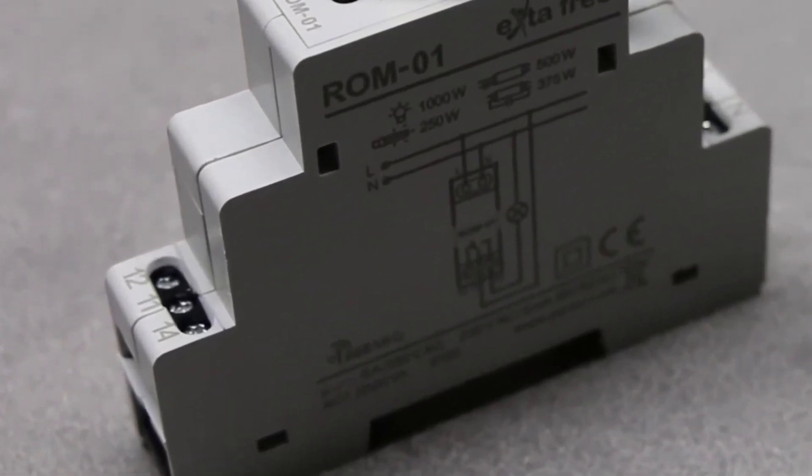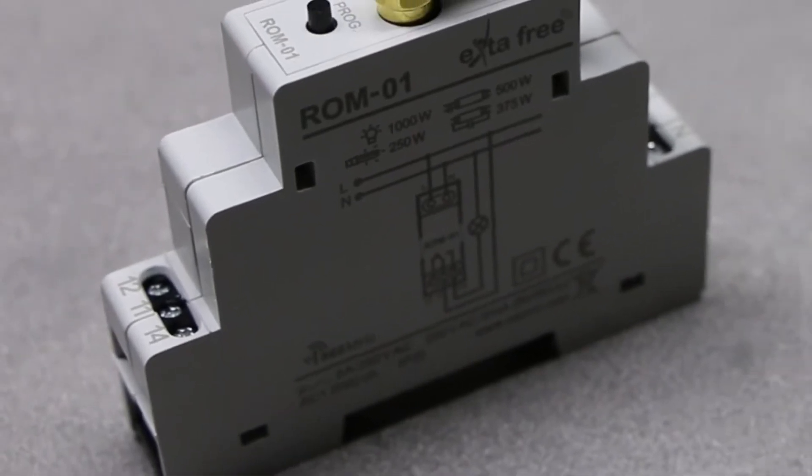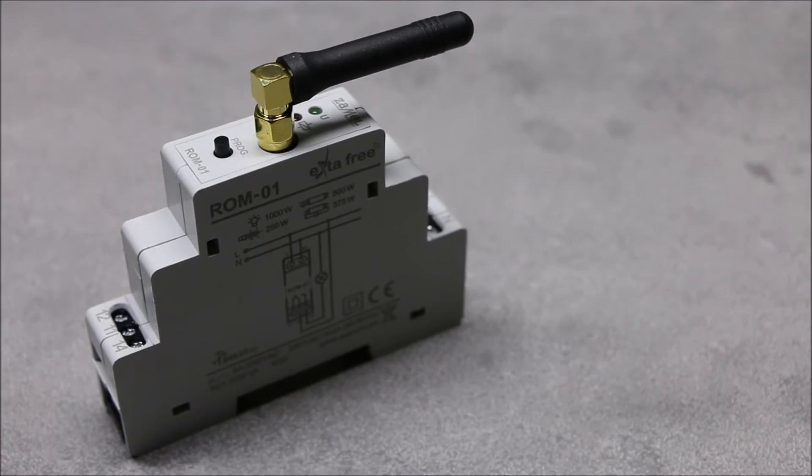After switching the supply voltage on, the contacts 11 and 14 of the relay are in the open state. The range of the ROM01 receiver depends on the power of paired transmitter, normally it is limited to 300 meters in open area.